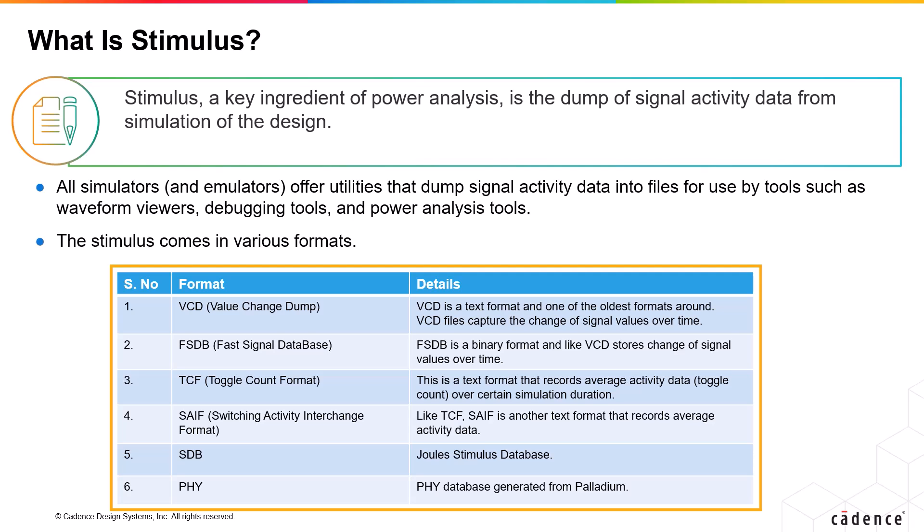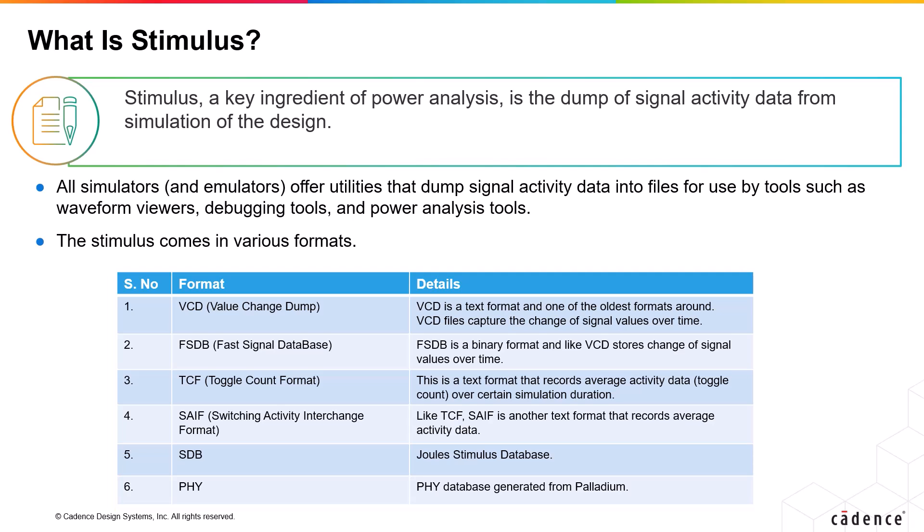Another important point is that TCF and SAIF formats are average-based formats, whereas VCD, SHM, FSDB, and PHY are trace-based or event-based formats.